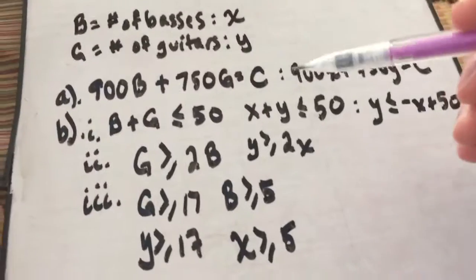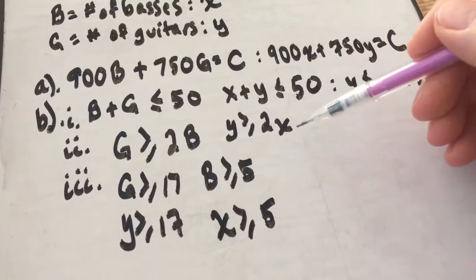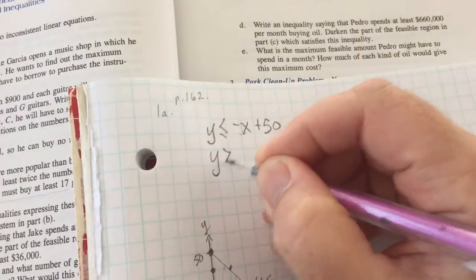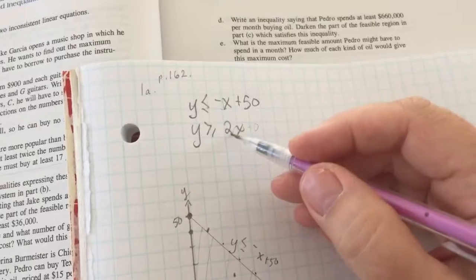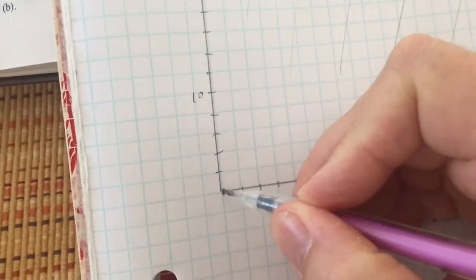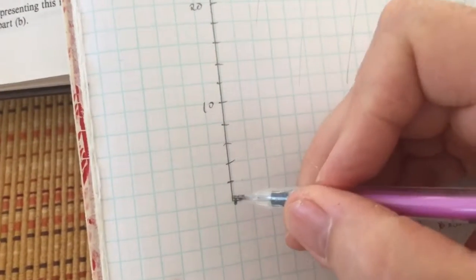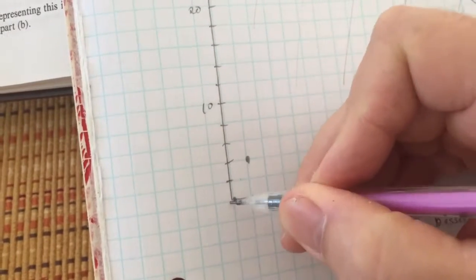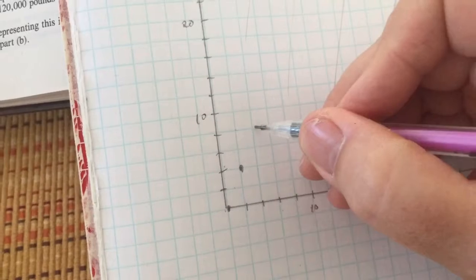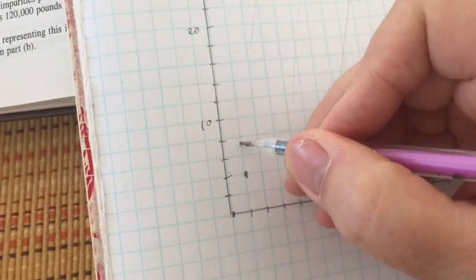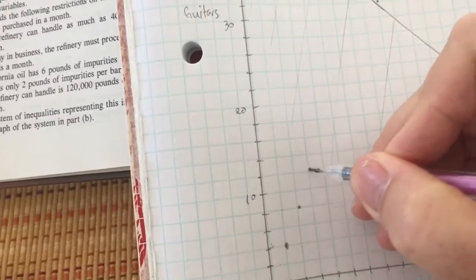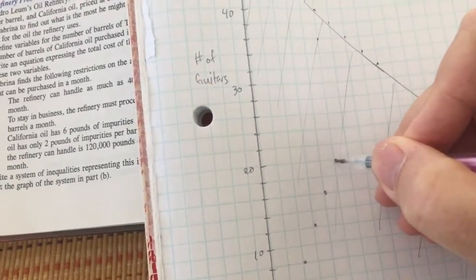The second line is Y ≥ 2X. The Y intercept is 0 and the slope is positive 2. Starting at the origin, I go up 2 over 1 — equivalently up 4 over 2. I plot those points and draw the line in. Because it's Y greater than or equal to 2X, I shade above this line.